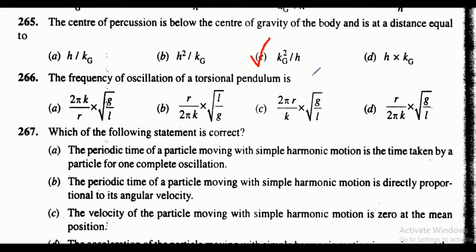Question 266: the frequency of oscillation of a torsional pendulum. The correct answer is option D, that is r upon 2 pi k into under root of g upon l.